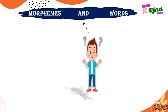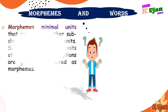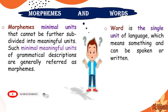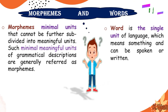The areas of morphology include morphemes and words. Morphemes are minimal units that cannot be further subdivided into meaningful units. Such minimal meaningful units of grammatical description are generally referred to as morphemes — the smallest unit in language that has meaning or grammatical function. A word, on the other hand, is the single unit of language that means something and can be spoken or written.